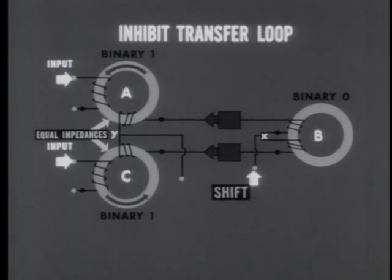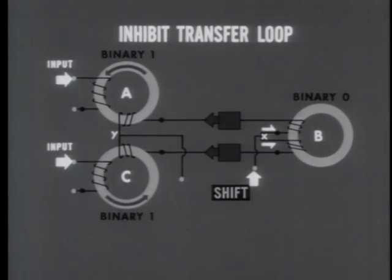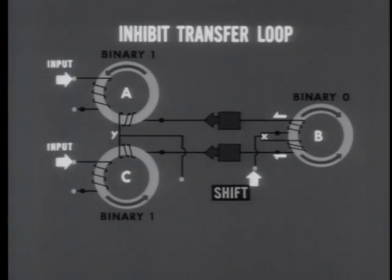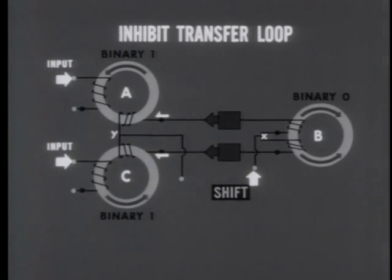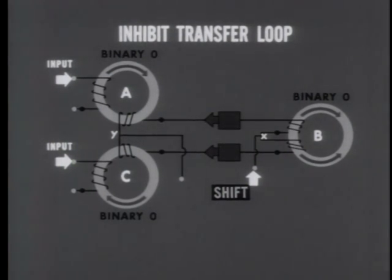If the impedances at cores A and C are equal, the shift pulse will divide into equal branch currents. At core B, the equal branch currents set up equal but opposing fluxes, which cancel each other out and leave the core at binary zero. At core A and core C, they come in as dot pulses and switch the cores to zero. The two branches join at point Y and flow out of the circuit. Thus, the shift pulse cleared cores A and C, but it was unable to transfer the one from A to B.